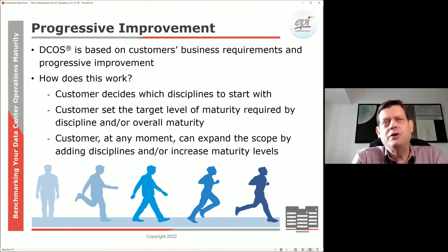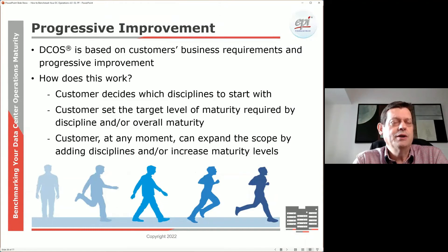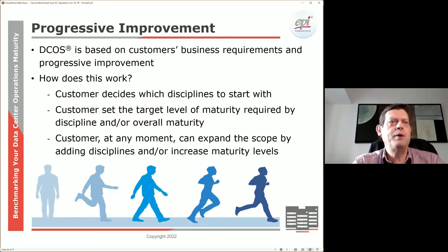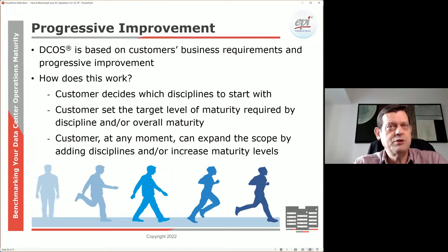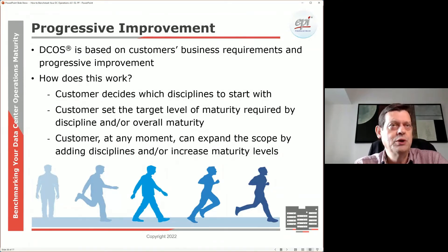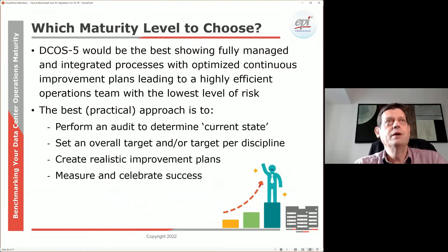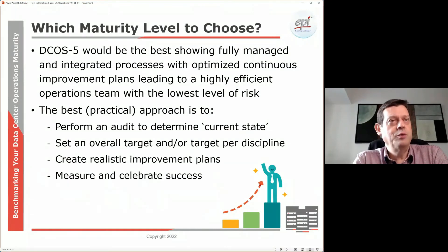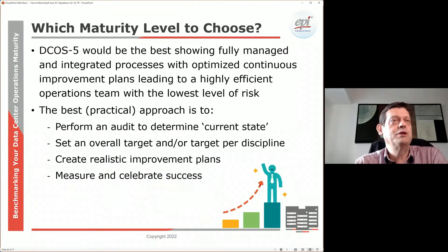This progressive approach is very important. We're all very busy in the data center industry, so improvements need to happen as time, business requirements, and resources allow. As a user, you can pick the domains most critical to you or where you have the greatest challenges, and slowly review, implement, and raise your maturity. There are two types of progressiveness: expanding the scope by adding disciplines over time, and increasing the maturity level — for example, moving from maturity level two up to level three or four.